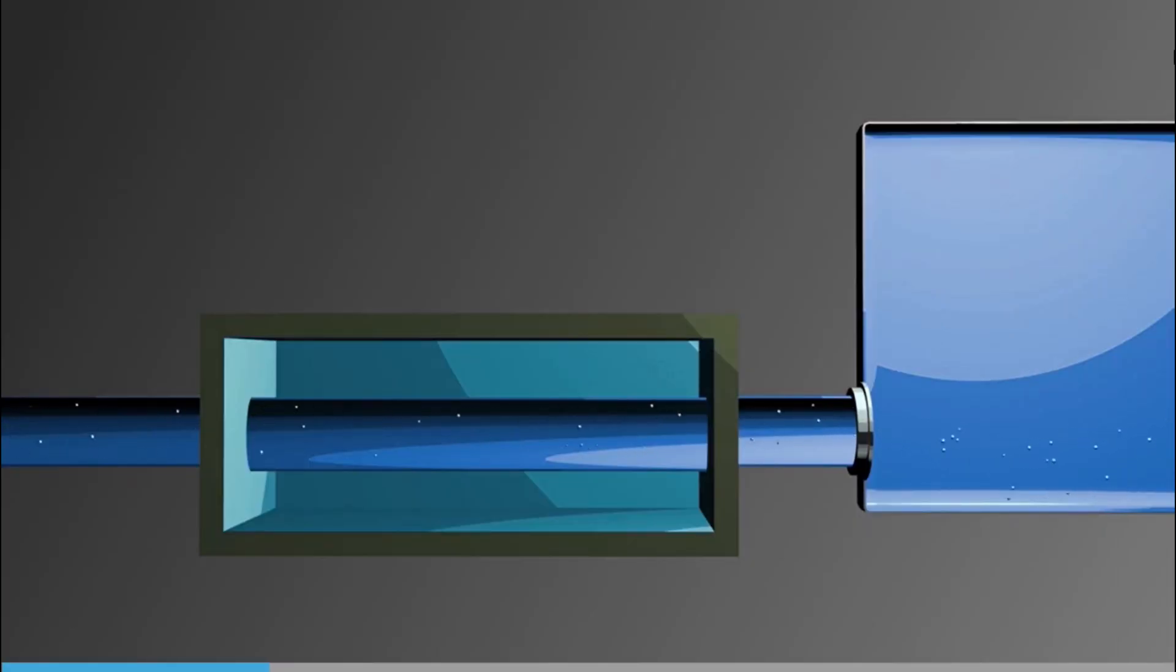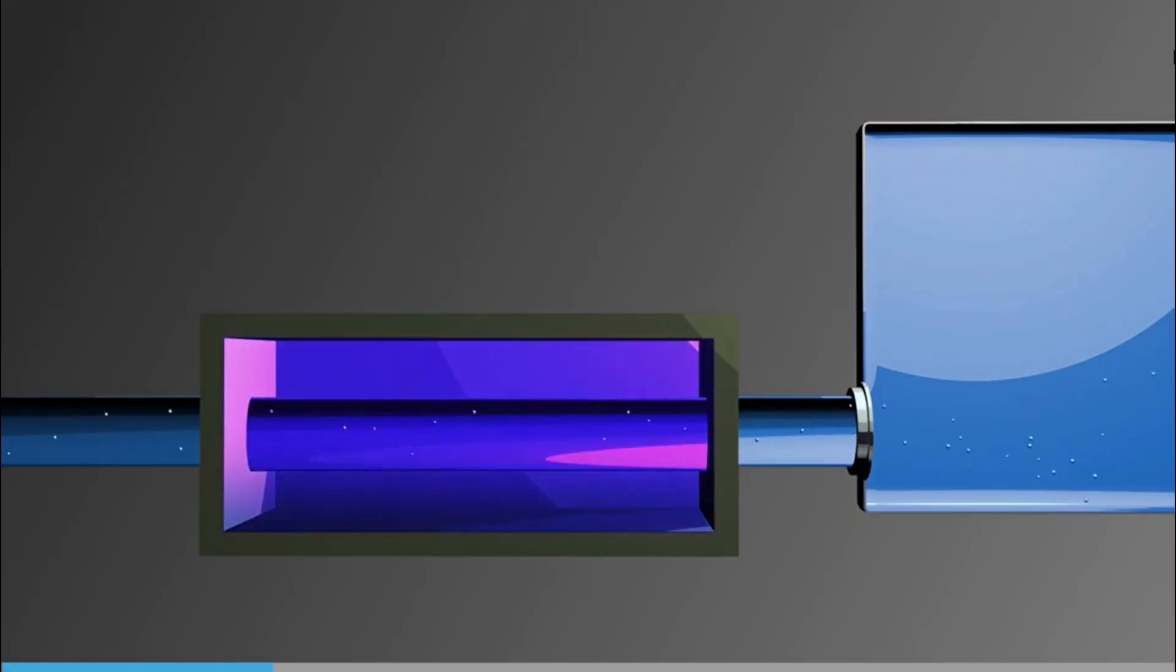UV systems generally use filters and ultraviolet light. UV light kills or inactivates organisms by disrupting their DNA, leaving them unable to perform vital cellular functions.